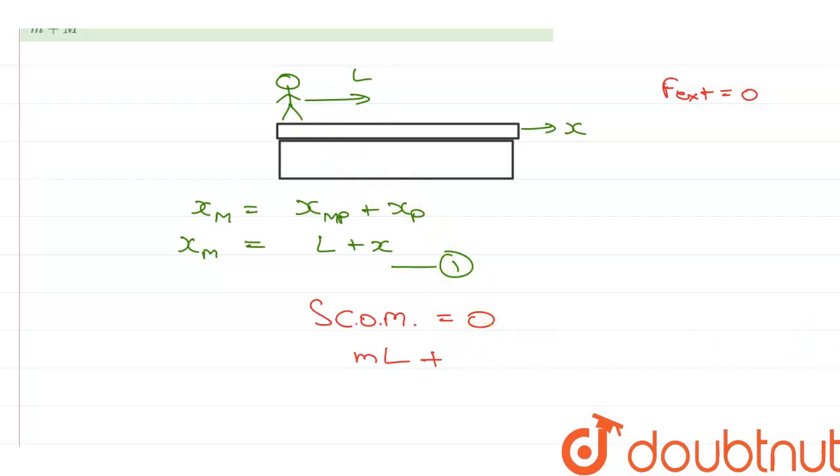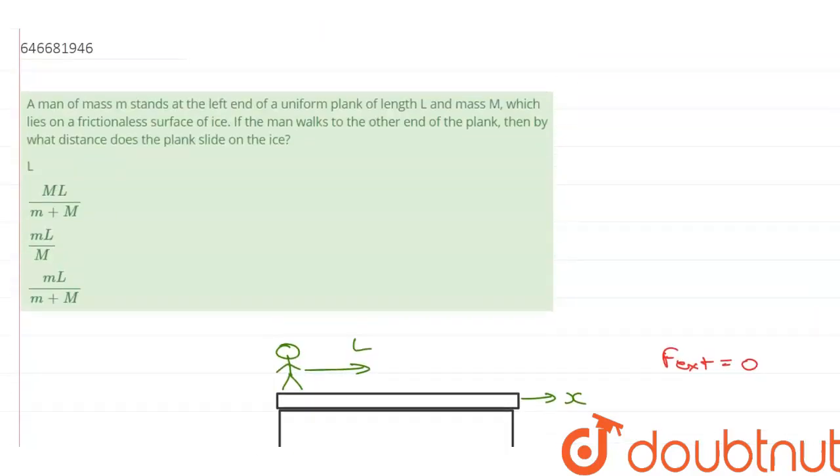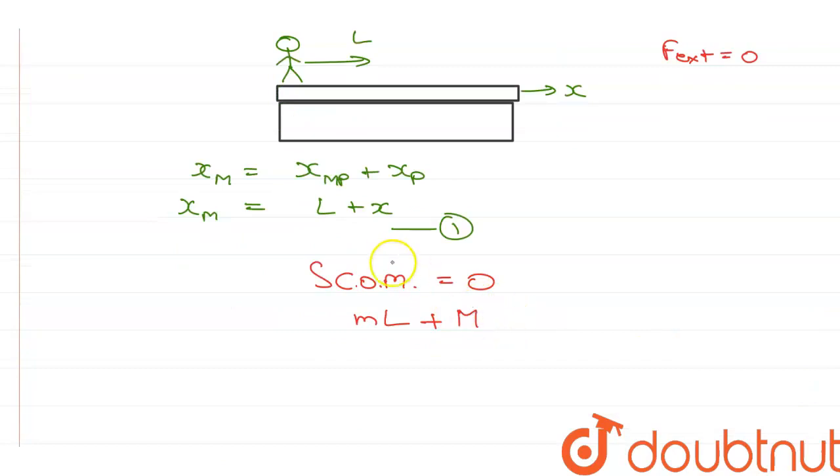plus mass of the plank which is capital M, times displacement of the plank that is x, all divided by m plus M, is equal to 0.